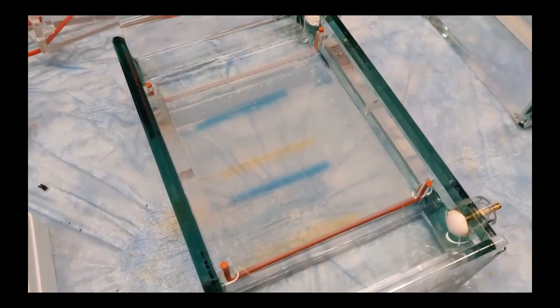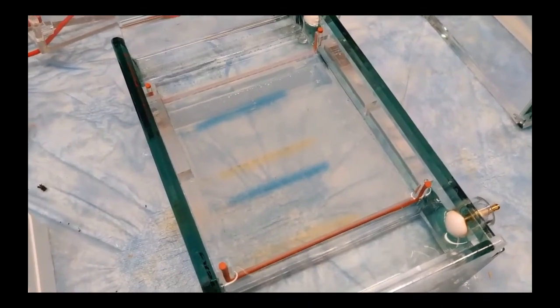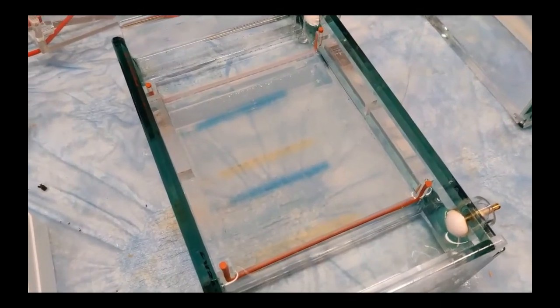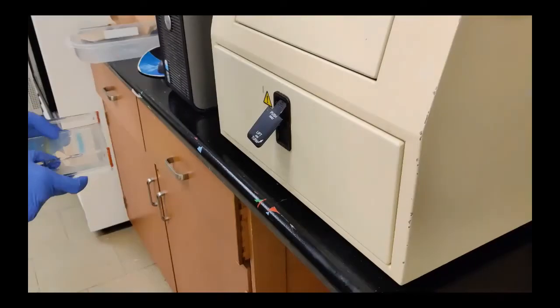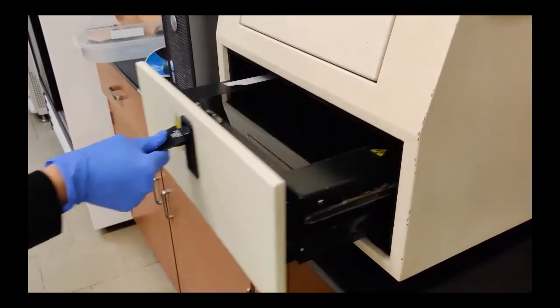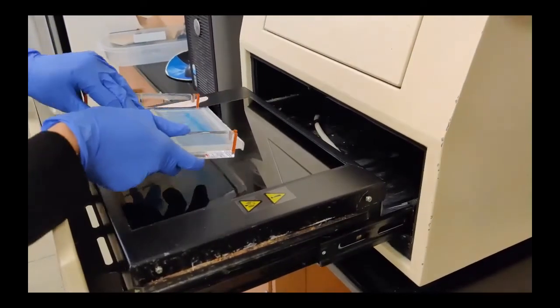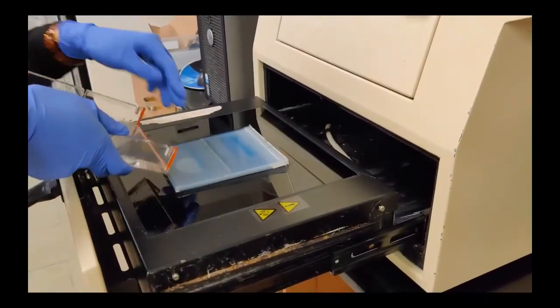We can run the gel for 45 minutes to one and a half hours. Here is the gel after finishing. To see the dye, we need to apply UV light. We will do this using this trans illuminator.